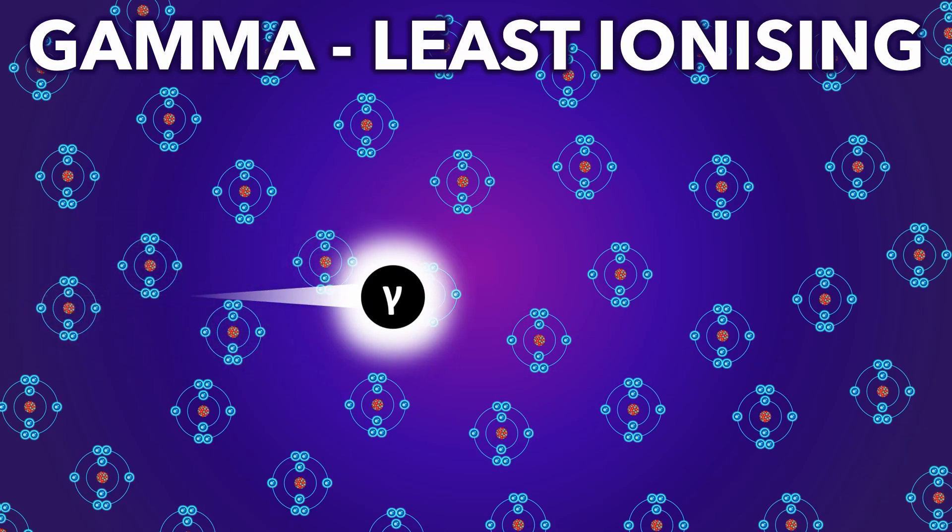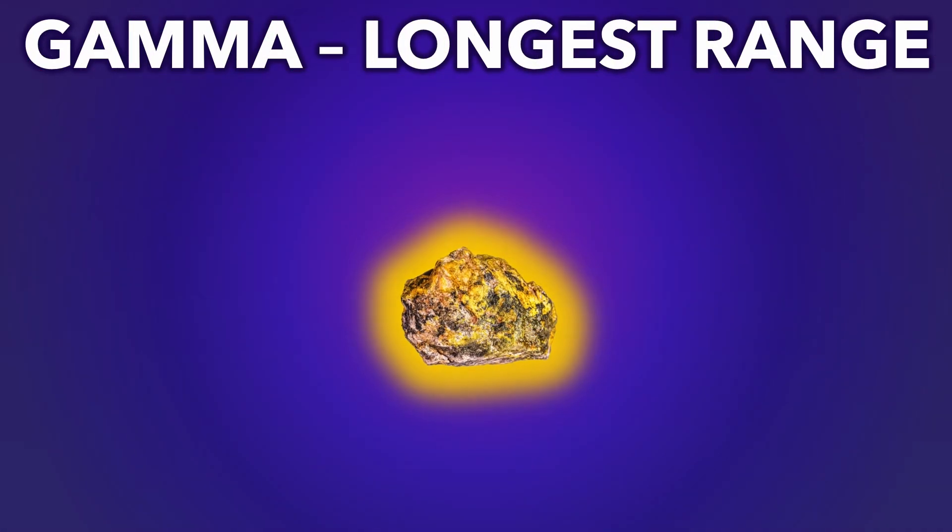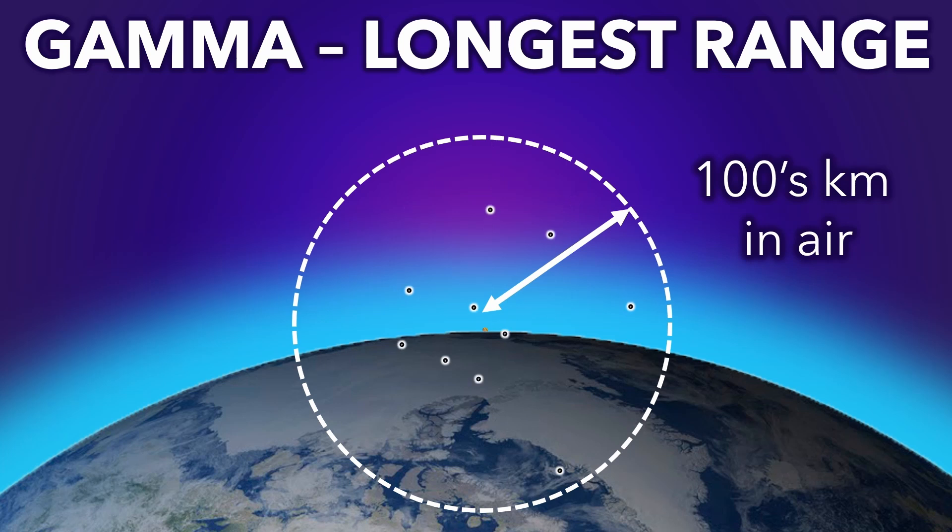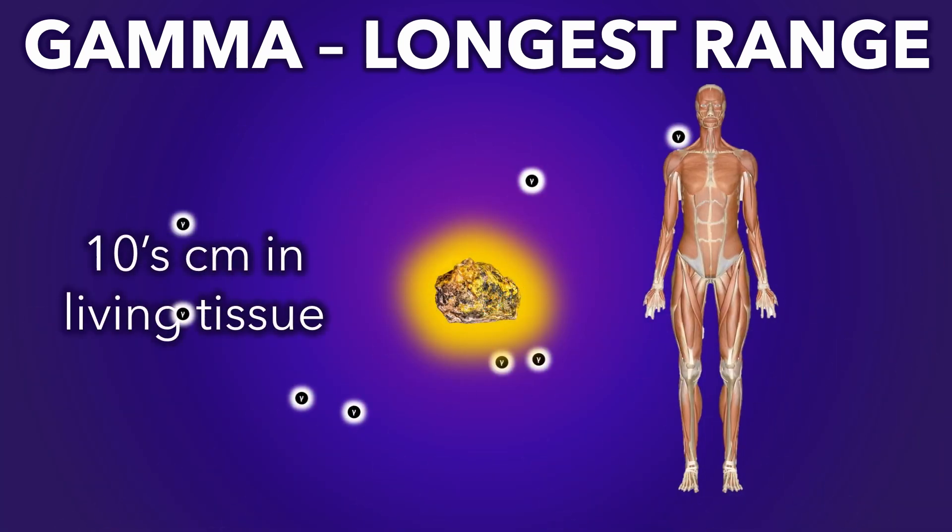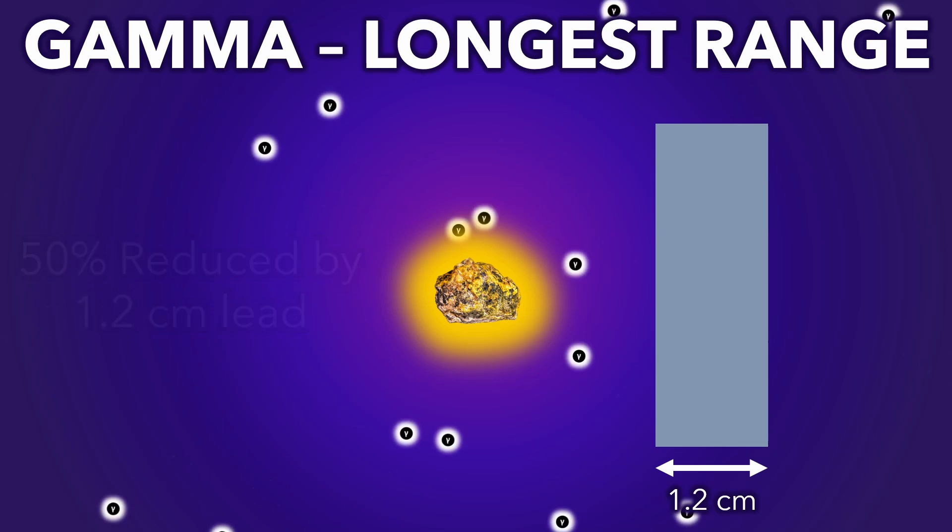Gamma is the least ionizing, as little as 3 to 5 ions per centimeter of air. This gives it the longest range, hundreds of kilometers in air, tens of centimeters through living tissue and its halved in intensity by 1.2 centimeters of lead.